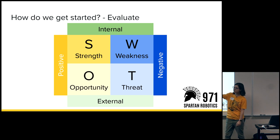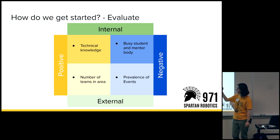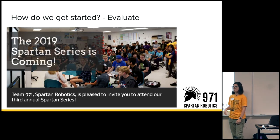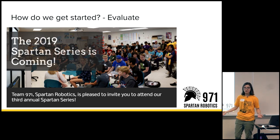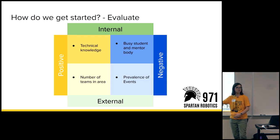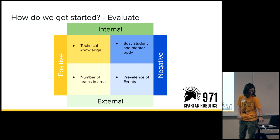Here's a sample SWOT analysis taken from part of 971's. One of the things we think is the strength of the team is our technical knowledge. An opportunity is the number of teams in the area. Some of the negatives is the amount of stuff going on, both for our internal student body and mentor body. We're very busy. A lot of our mentors work for startups, or the amount of events in the area. In this situation, one of the things you might decide to do is run Spartan Series, which we've done this year. That's how we got here, based on looking at what our team is doing and our environment.